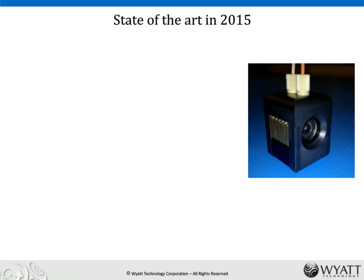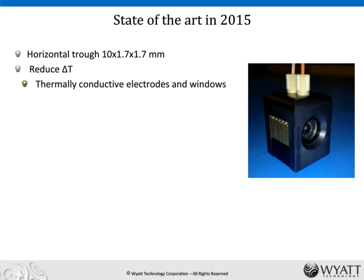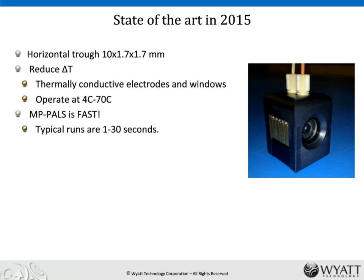In 2015, we make the measurement in a small flow cell with fluid fittings at the top, electrodes on both sides, and a window for the laser. The cell has the shape of a horizontal trough — 10 mm by 1.7 by 1.7 mm — which is quite small, helping suppress convection. Thermally conductive electrodes and windows reduce temperature differences. We can operate from 4°C to 70°C. Because of parallelism, we make measurements very quickly — as fast as 1 second for large particles and 30 seconds for small nanoparticles — before convection develops.